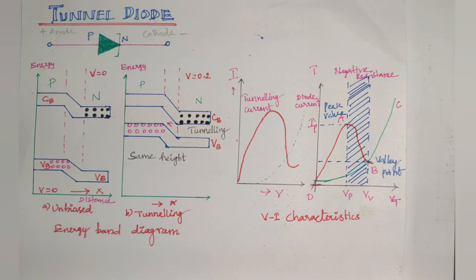First we have to see what subtopics cover this topic. First one is the principle, then symbol of the diode, construction, then energy level diagram, and finally V-I characteristics and applications.